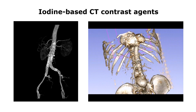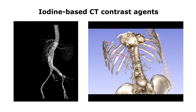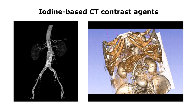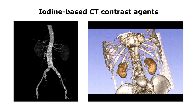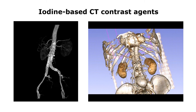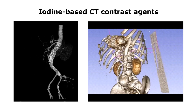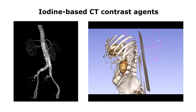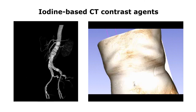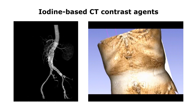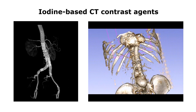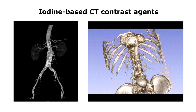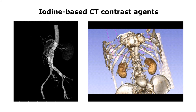The image on the left shows a stent placed around an abdominal aortic aneurysm. The image on the right shows contrast in various blood vessels and organs throughout the chest and abdomen. These images would simply not have been possible without iodine-based contrast agents.